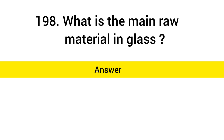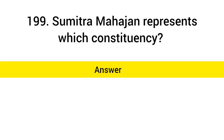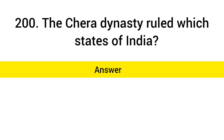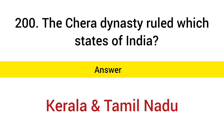What is the main raw material in glass? Answer: Silica. Sumitra Mahajan represents which constituency? Answer: Indore. The Chera dynasty ruled which states of India? Answer: Kerala and Tamil Nadu.